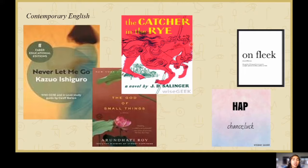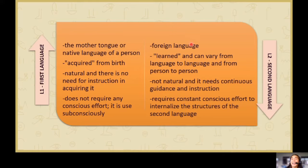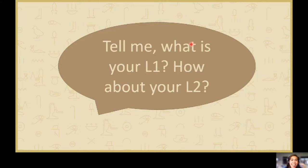So what are some linguistic terms in culture and society? These are the things you have to remember when speaking about language. First, we have first language and second language. First language is the native language, and the second language is the language you learn after the native language. For example, your first language is Filipino and your second language is English — the language you learn from school. So your L1 is Filipino and your L2 is English.